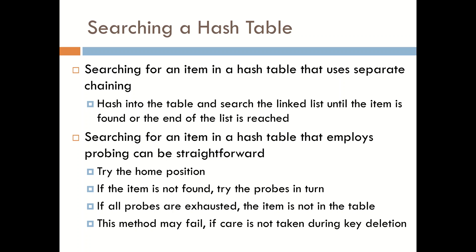Searching for an item in a hash table that uses separate chaining is fairly simple. We hash into the location and then we traverse the linked list until we find the item or we reach the end of the list. If we find the item, we report back that it's found. Otherwise we report that the item is not found.